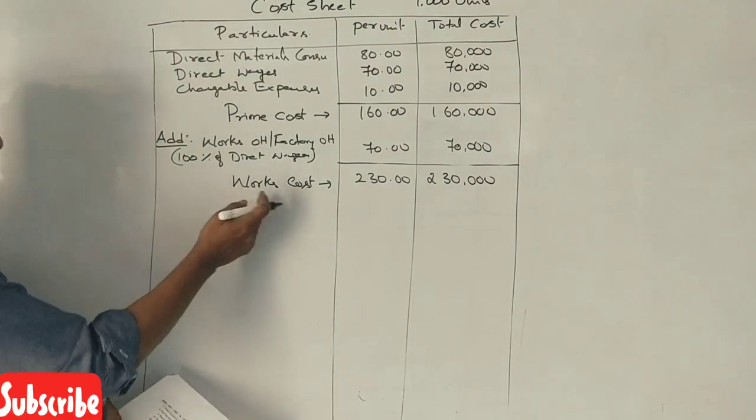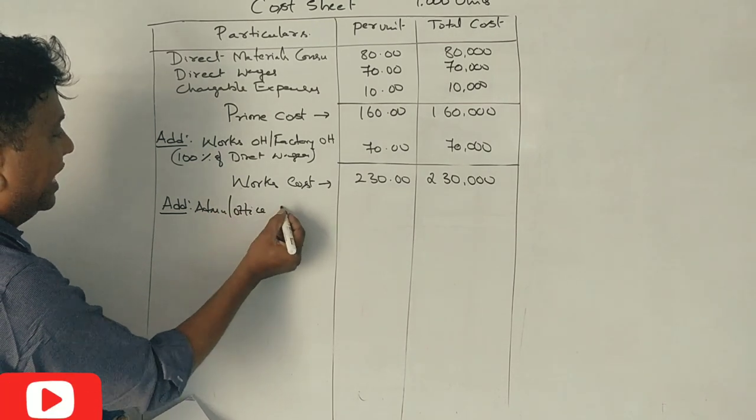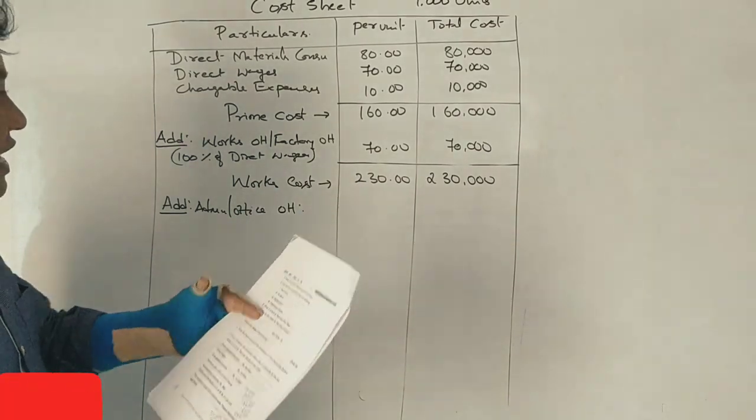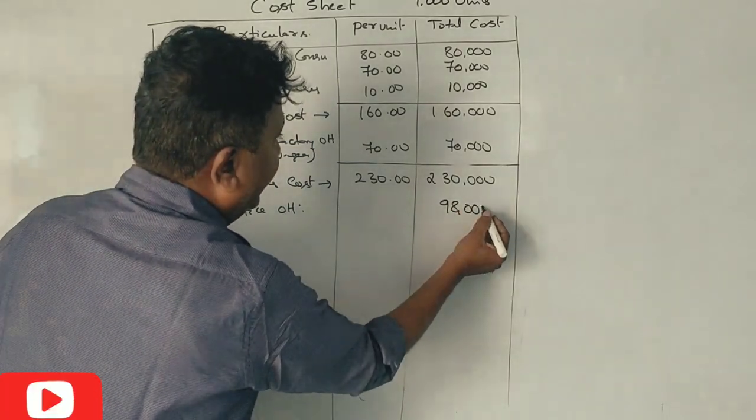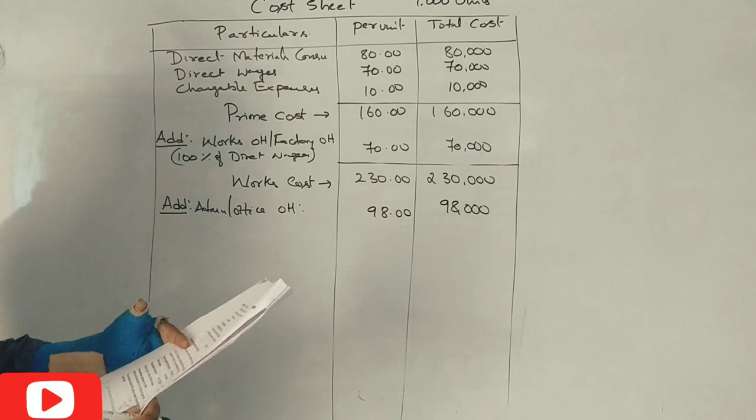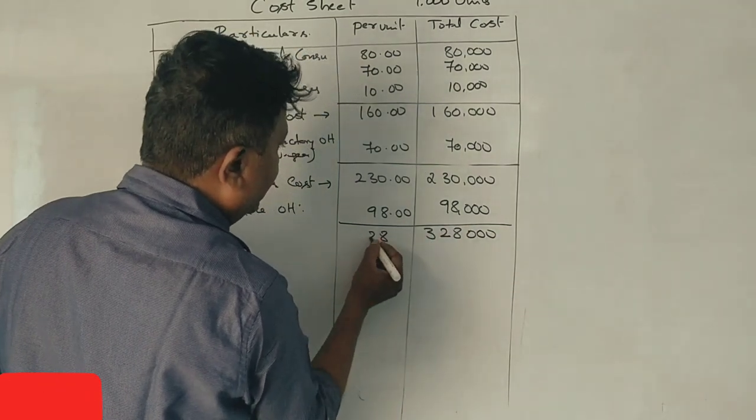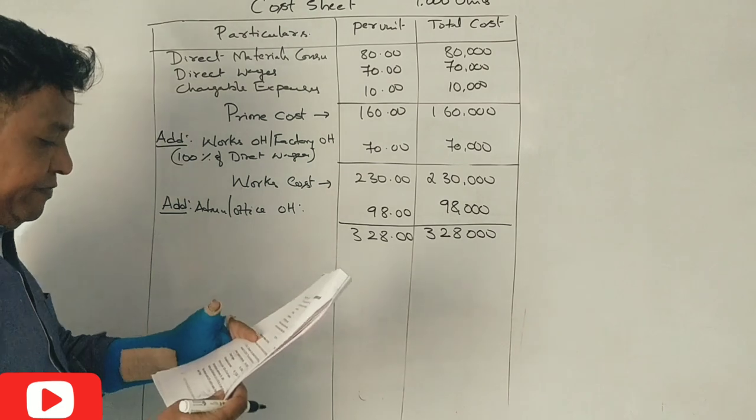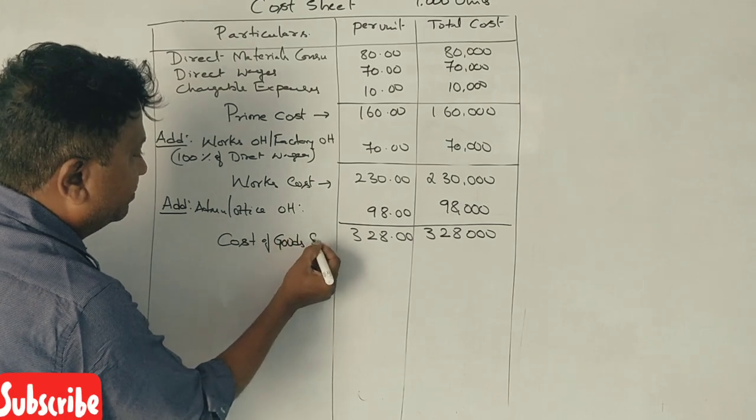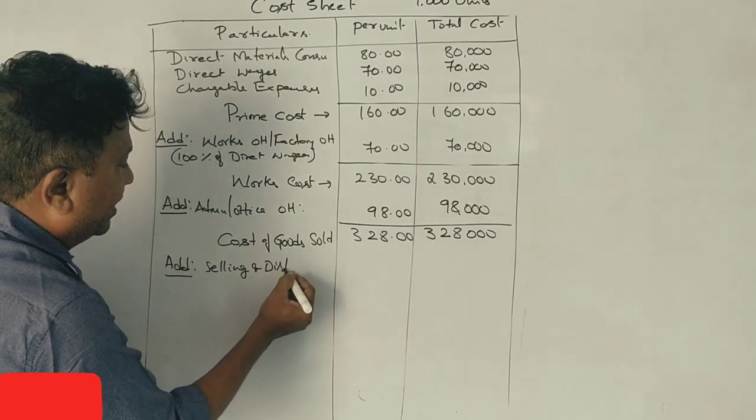Next add works overhead, then administration or office overheads. Works on cost is 100% of direct wages, so Rs. 70,000. Administrative expenses are Rs. 98,000. So total cost of production is Rs. 3,28,000, per unit Rs. 328.